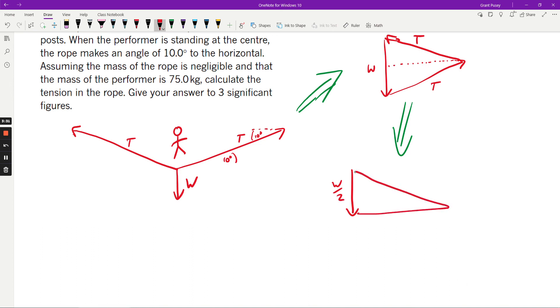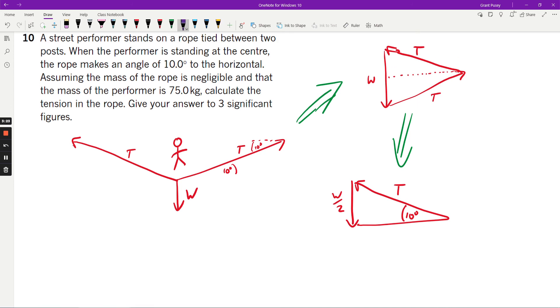And you've got a tensional force doing this, and the angle here is that 10 degrees. So all I've done is I've just captured that side of it and created it here, which is why you've got the W over 2.